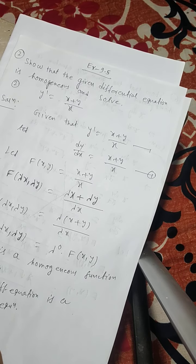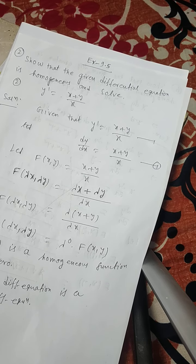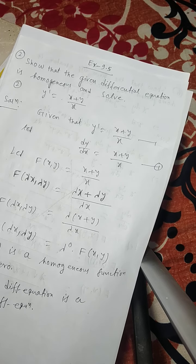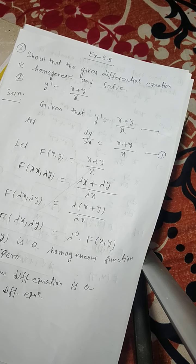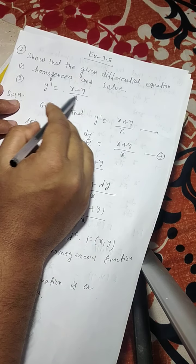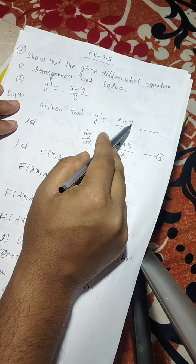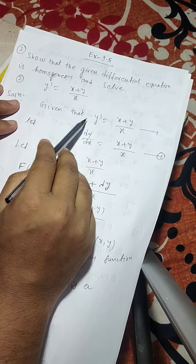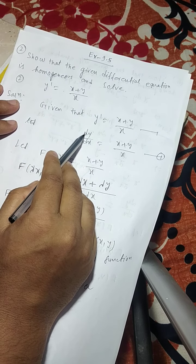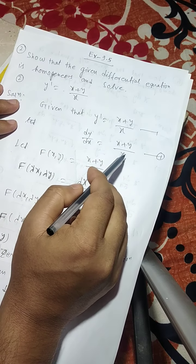Exercise 9.5, question number 2: show that the given differential equation is homogeneous and solve it. The given equation is y′ equals to (x + y) divided by x. So dy/dx equals to (x + y)/x. This is equation number 1.